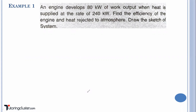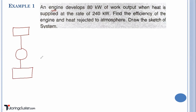The numericals are easy if you have understood the block diagram well. Your exam examples will be based on either engine, refrigerator, or heat pump. Example one: an engine develops 80 kilowatts of work output when heat is supplied at the rate of 240 kilowatts. Find the efficiency of the engine and heat rejected to the atmosphere, and draw the sketch of the system. This example is based on an engine. Draw the sketch first — the sketch remains the same whatever the numerical.